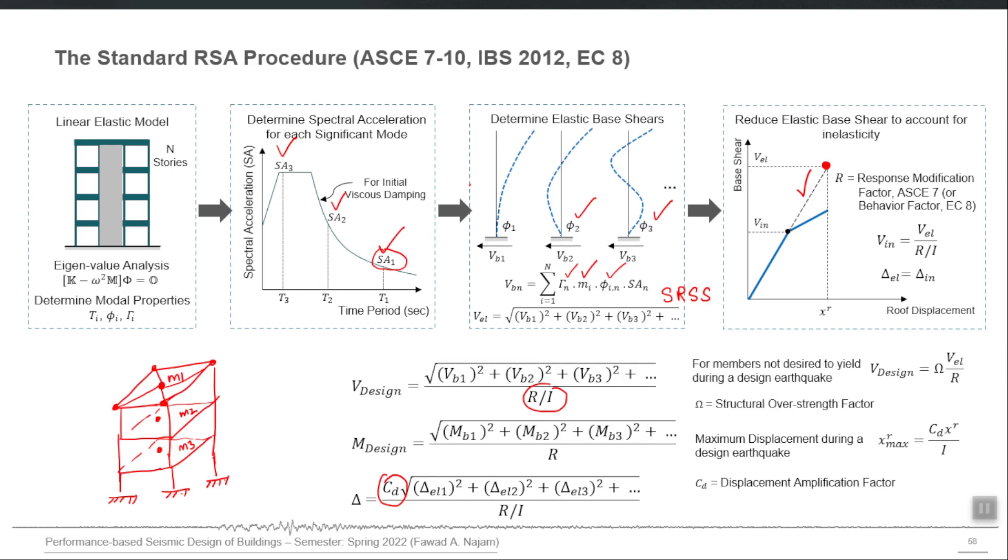This concept is called constraints and it is not limited only to floor. You can constrain any two nodes or any set of nodes in any direction depending upon if you want to model some real behavior which can be captured by the use of these constraints concept. So one of the examples of this constraint is that rigid diaphragm.